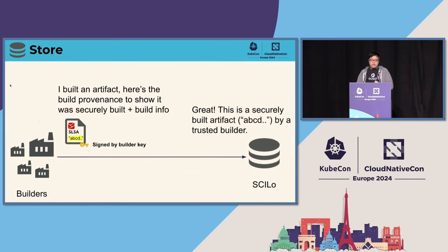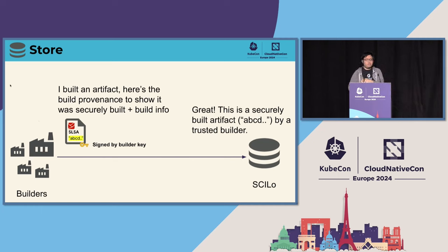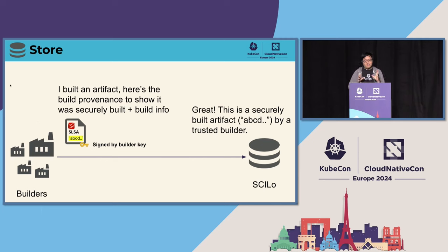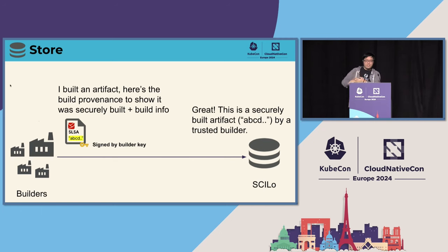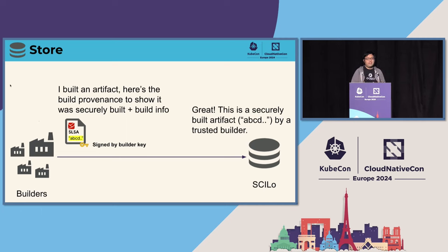Pre-EO, what does SILO do? Traditionally, when builders build an artifact, they generate SLSA provenance. The TLDR if you're not familiar with SLSA: it's basically a document that says 'I'm a builder, I built this artifact securely, here's some additional build information, signed off by the builder.' SILO then validates and says: this artifact with hash ABCD is good, and it was built by a trusted builder whose signature I verified.